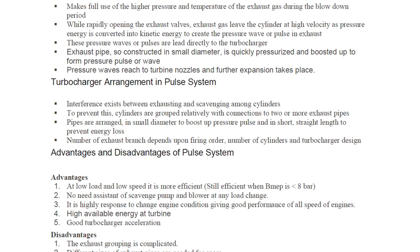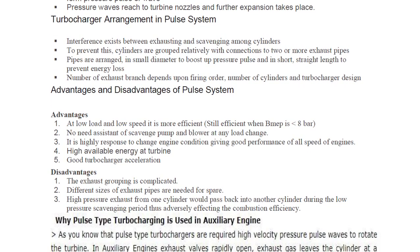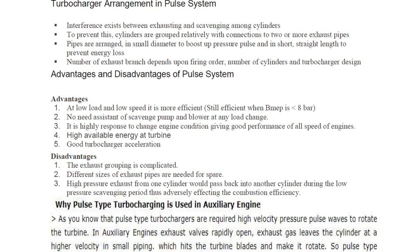Advantages of the pulse system: at low load and low speed it is more efficient, still efficient when BMIP is less than 8 bar, no need for assistance from a scavenge pump or blower, highly responsive to changes in engine condition, giving good performance at all engine speeds, and highly available energy at the turbine with good turbocharger acceleration.